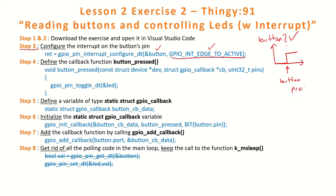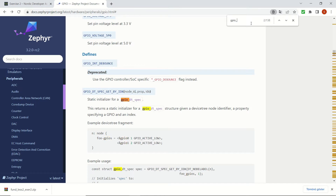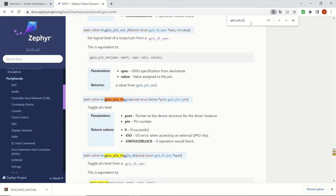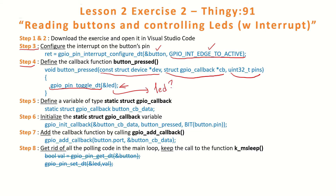Once we press the button it goes to logical one, and this is the active state. Next, we will be defining the callback function. It has three parameters. Inside the function it toggles the LED that we already identified. Looking at `gpio_pin_toggle`, it toggles the pin level from a GPIO DT spec — the GPIO specification from device tree — so that will be the LED, and we get that LED definition from our code.